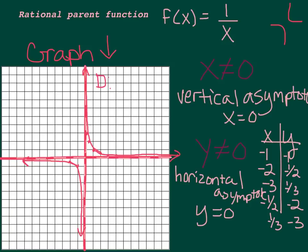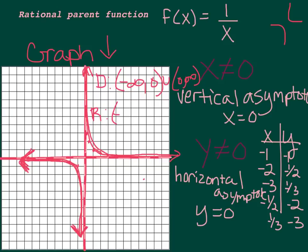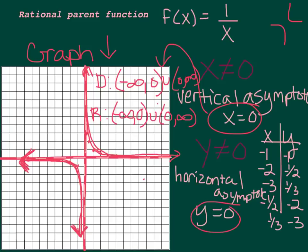The other important thing we need to talk about with these graphs is domain and range. For the domain, x exists everywhere to the left, everywhere, except 0. Then it picks right back up after 0 and goes on to infinity. So we say negative infinity to 0, with a union of 0 to infinity. The range: y goes from negative infinity up until it hits the asymptote, can't equal 0, so negative infinity to 0, and then 0 to infinity. Wherever your asymptote is, that's what your break is in your domain and range.